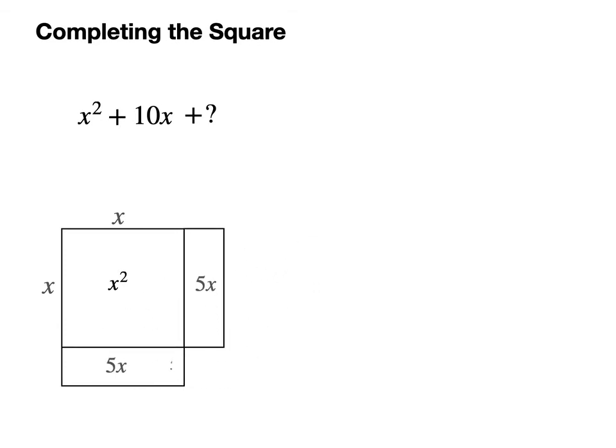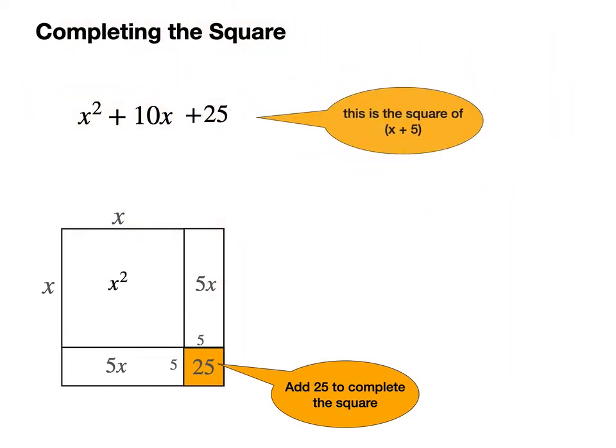The final step is to complete the square, which I can do with a 5 by 5 square here in the corner. So by adding 25 I can complete the square. And it is the square of x plus 5.